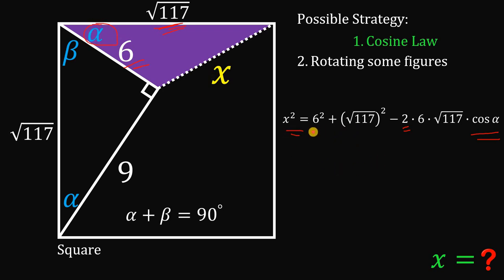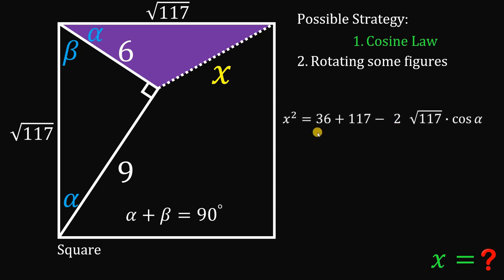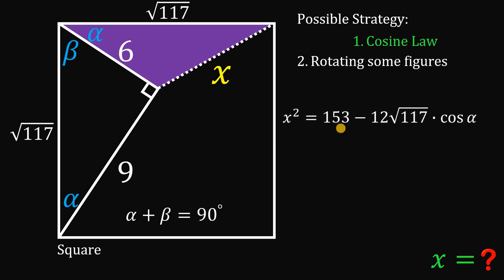Let's simplify. 6 squared gives 36. (√117) squared cancels the square root, giving 117. And 2 times 6 gives 12. So 36 plus 117 gives us 153. Now the question is: what is the value of cosine alpha?